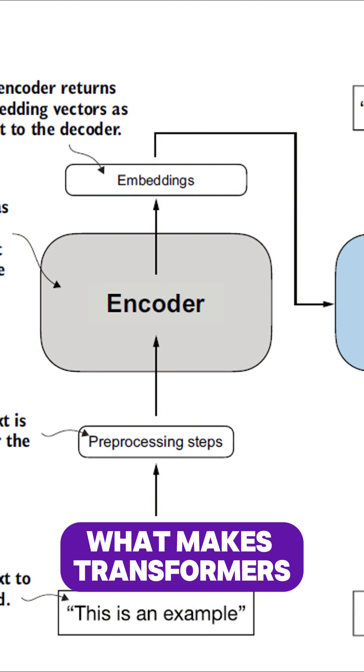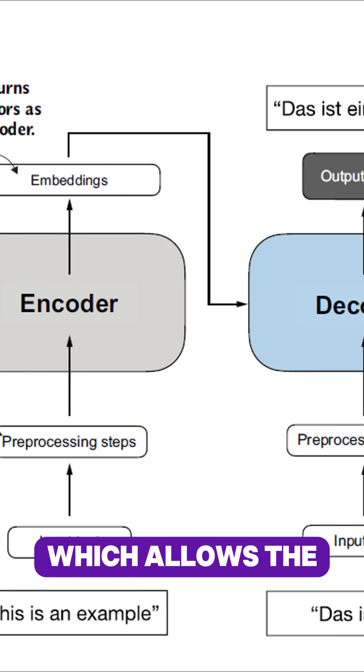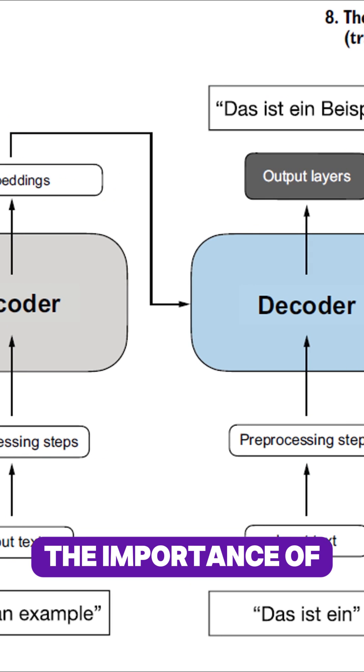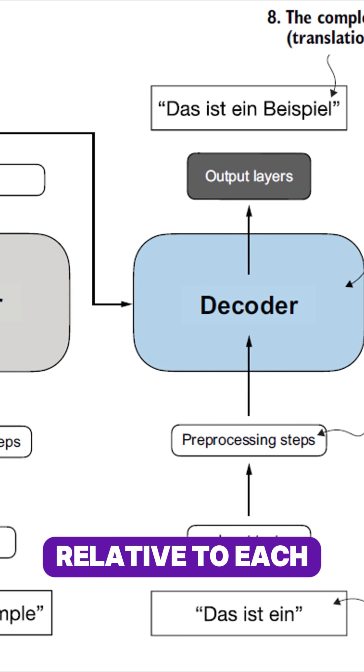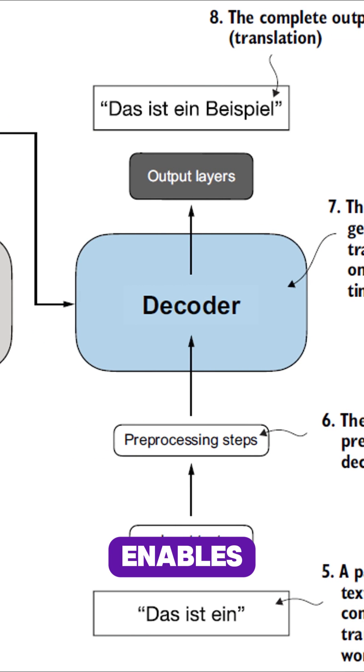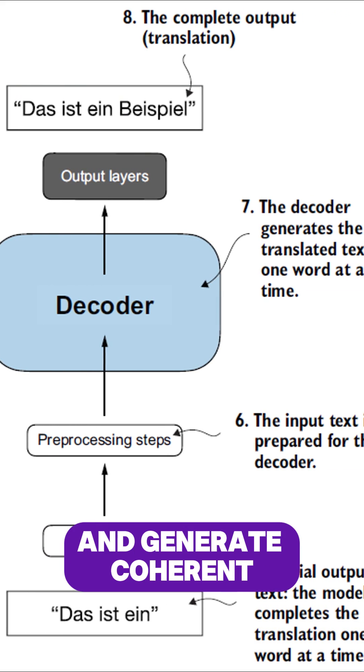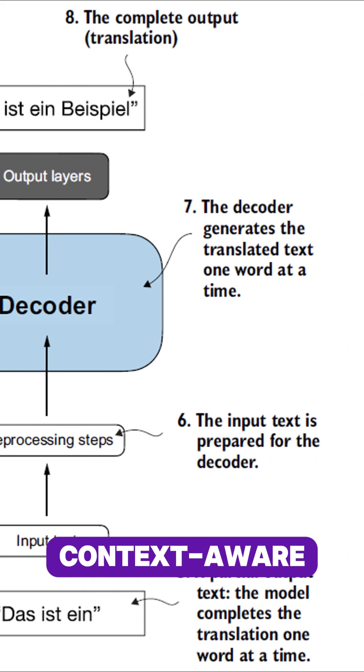What makes transformers unique is the self-attention mechanism which allows the model to weigh the importance of different words in a sequence relative to each other. This is what enables transformers to capture long-range dependencies and generate coherent context-aware text.